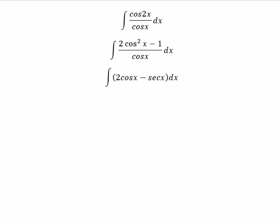And now we can get the final answer. The integral of cos2x divided by cosx, you got about 2sinx. The integral of secx, you got about ln of the absolute value of secx plus tanx. And we put about C as a constant.